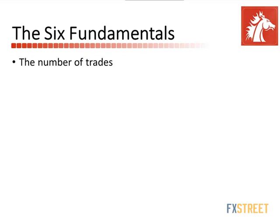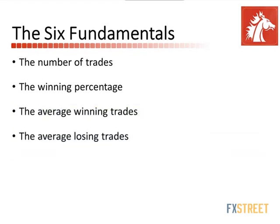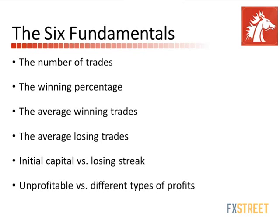Here are the six fundamentals of systematic trading. Number one is the number of trades. Number two is the winning percentage. Number three is the average winning trade. Number four is the average losing trade. Number five is initial capital versus losing streak. And number six is unprofitable versus different type of profit. These are the six fundamentals of systematic trading.